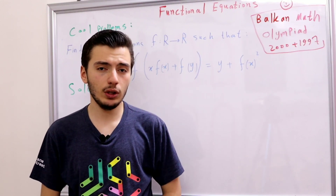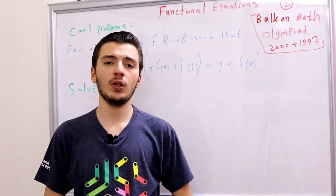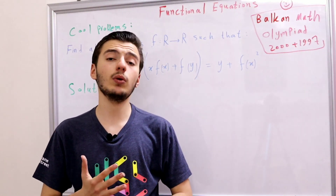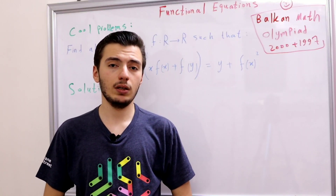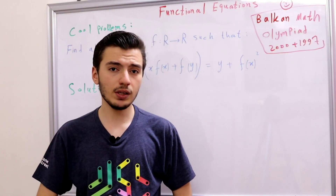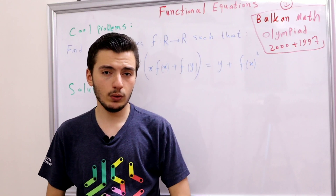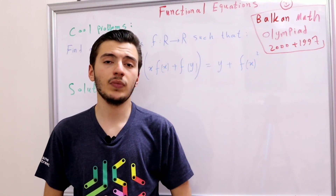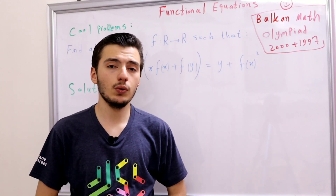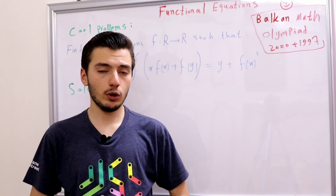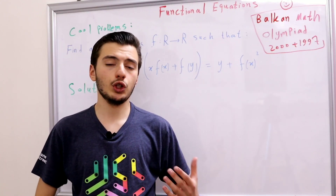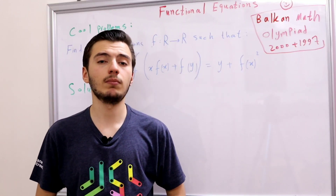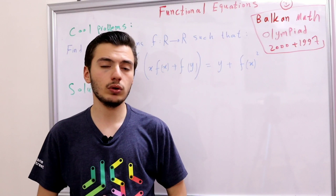We started the course by introducing the substitution strategy. We've learned some techniques in the substitution strategy — for example substituting with small numbers, the symmetry substitution p(y,x), and we've also talked about the cancelling method and the circle method. Then we moved to surjectivity, the surjectivity principle, in which we've shown that our function is surjective and then used some surjectivity tricks in order to solve the problem.